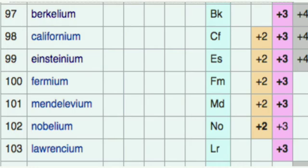The large number of oxidation states exhibited by these actinide elements is mainly because the energy level difference between 5f and 6d is comparatively small compared to the energy difference between 4f and 5d in the case of lanthanides. That is why the common oxidation state of lanthanides is plus 3, but actinides exhibit higher oxidation states.